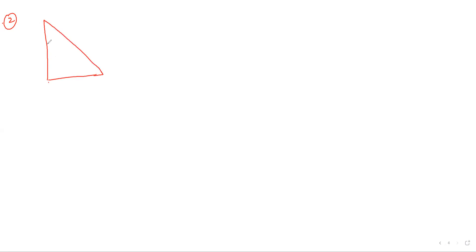Second question. In the given figure, triangle PQR with a 90-degree angle at Q, and two sides given: 12 centimeters and 13 centimeters. Find tan P minus cot R. Two sides are given, so Harsha and Rida, you will do it yourself. First, find the third side of the triangle by Pythagoras theorem, then find tan P and cot R.